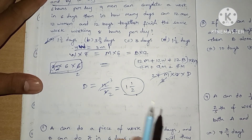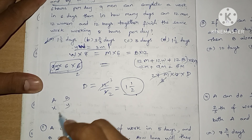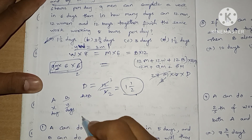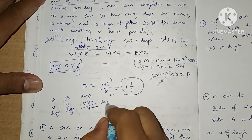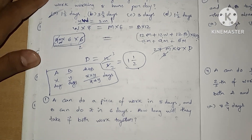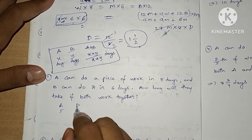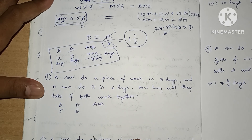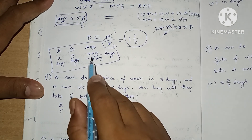Now we are going to learn one more concept. If person A can do a work in X days and another person can do a piece of work in Y days, both A and B can complete the whole work in X × Y divided by X + Y days. This is the formula we need to learn for the next questions. Let's see the question: A can do a piece of work in 5 days, A works in 5 days.